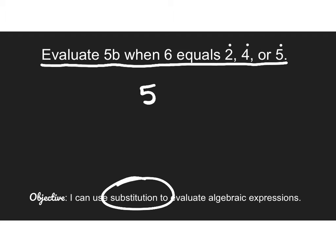So I'm going to evaluate 5b. Remember, this means 5 times b. But I'm going to substitute these values in. So I'm going to substitute, instead of b, I'm going to use 2. So now this is the same as saying 5 times 2. If the value of b is 2, then 5b is equal to 10.